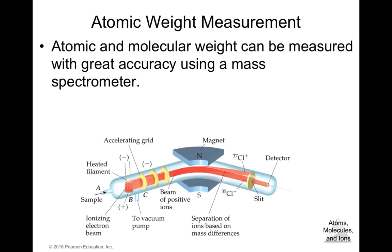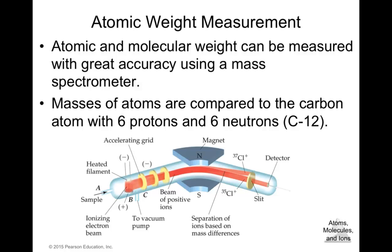Atomic and molecular weight can be measured with great accuracy using a mass spectrometer. The standard reference for all elements is the carbon atom with 6 protons and 6 neutrons, established as carbon-12. An example of a mass spectrometer shows how a sample, such as chlorine, is passed through and detected — chlorine-35 and chlorine-37 can be separated in the detector, demonstrating the high accuracy of mass spectrometry for determining atomic mass.